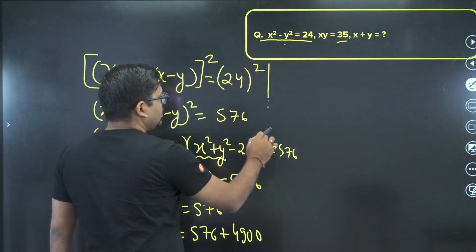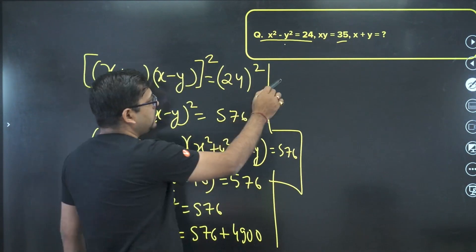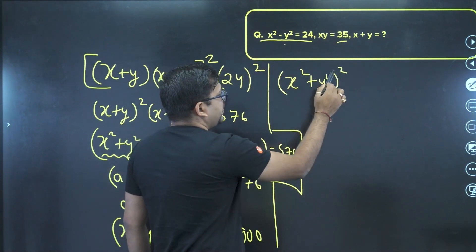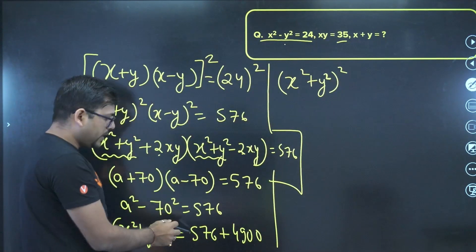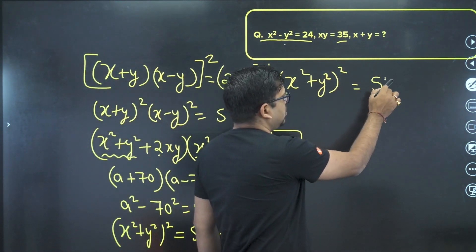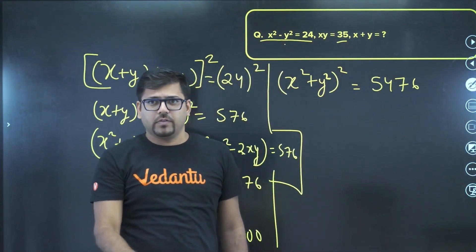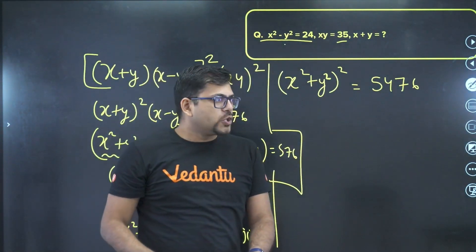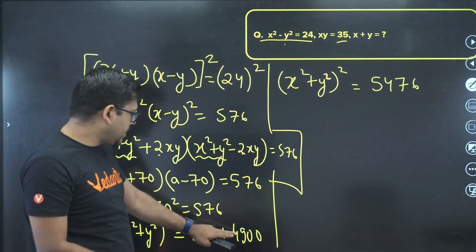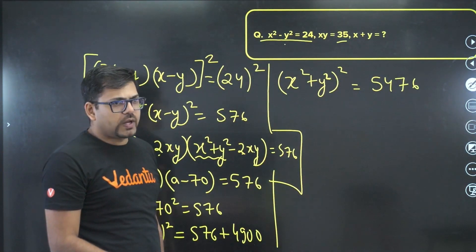We need to take the square root of 5476. This is more than 70 for sure, since it equals 70² plus 24². Let's try 75² — that's 5625, which is larger than 5476. So let's try 74².